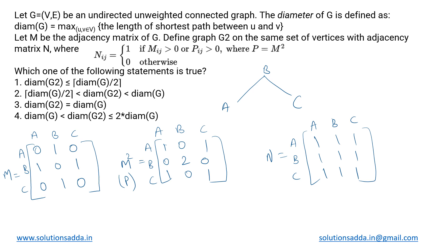This is a graph theory question. We have been given a graph G which is undirected, unweighted, and connected. For this graph G, they are defining its diameter as the maximum over all pairs of vertices u and v, of the length of the shortest path between u and v. We will take every possible pair of vertices from the graph, find the shortest path between those two vertices, and among all the shortest paths we get, we will take the maximum one.